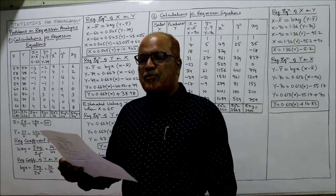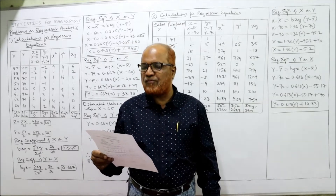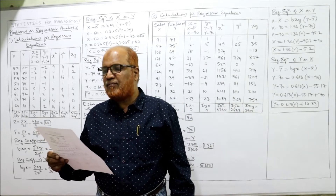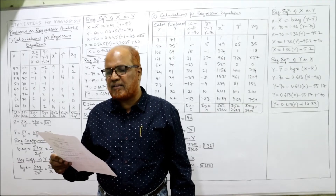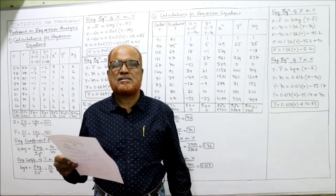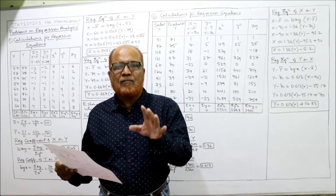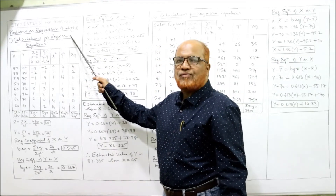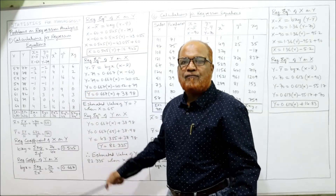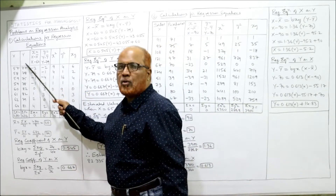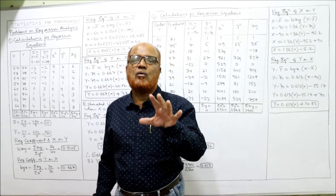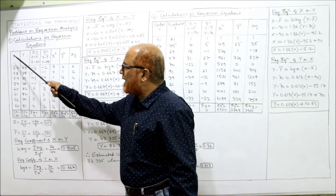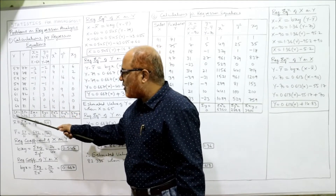The first problem says: find the two regression equations from the following data. Two regression equations means we have to find X on Y and Y on X. The X values given are 57, 58, 59, 59, and Y values are 77, 78, 75, and so on. We also need to estimate the value of Y when X is 65 — we'll do that afterwards. First, let's set up the calculation table with X and Y columns. Total of X is 480, total of Y is 632.